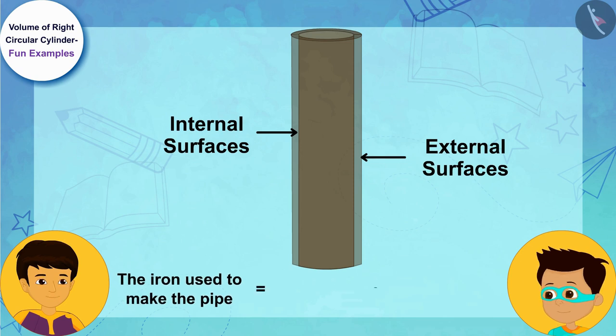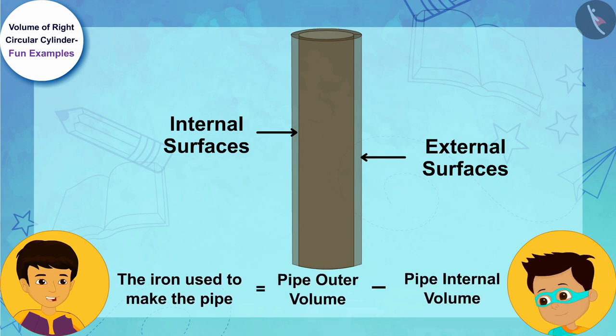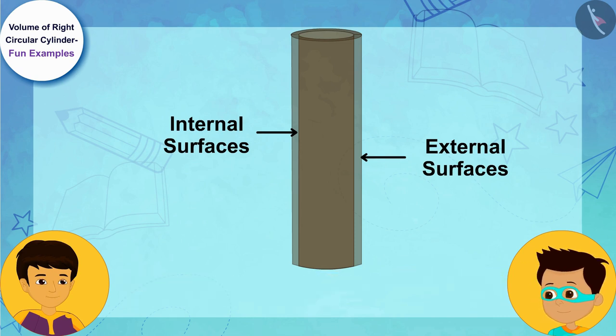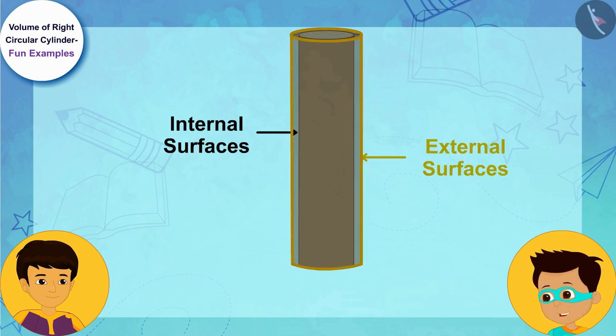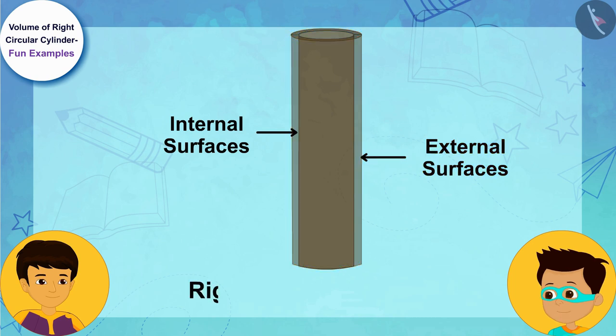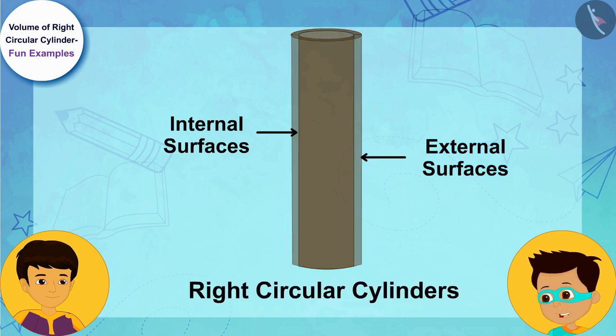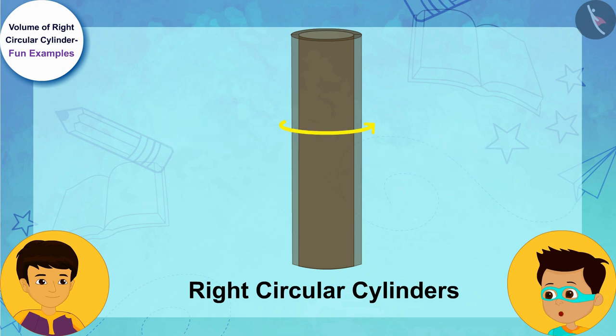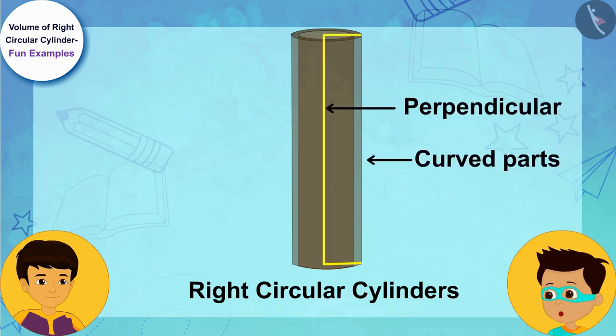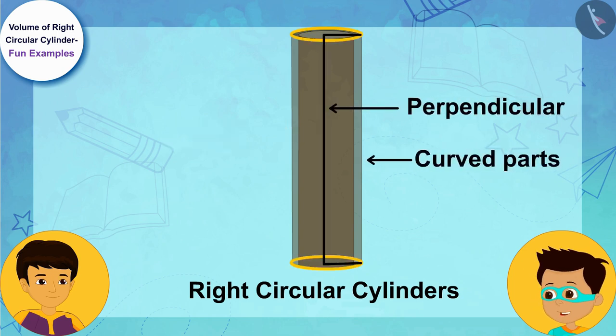Yes Manas, and see, both the inner and outer surfaces of the pipe are right circular cylinders because their curved parts are perpendicular to their circular base.